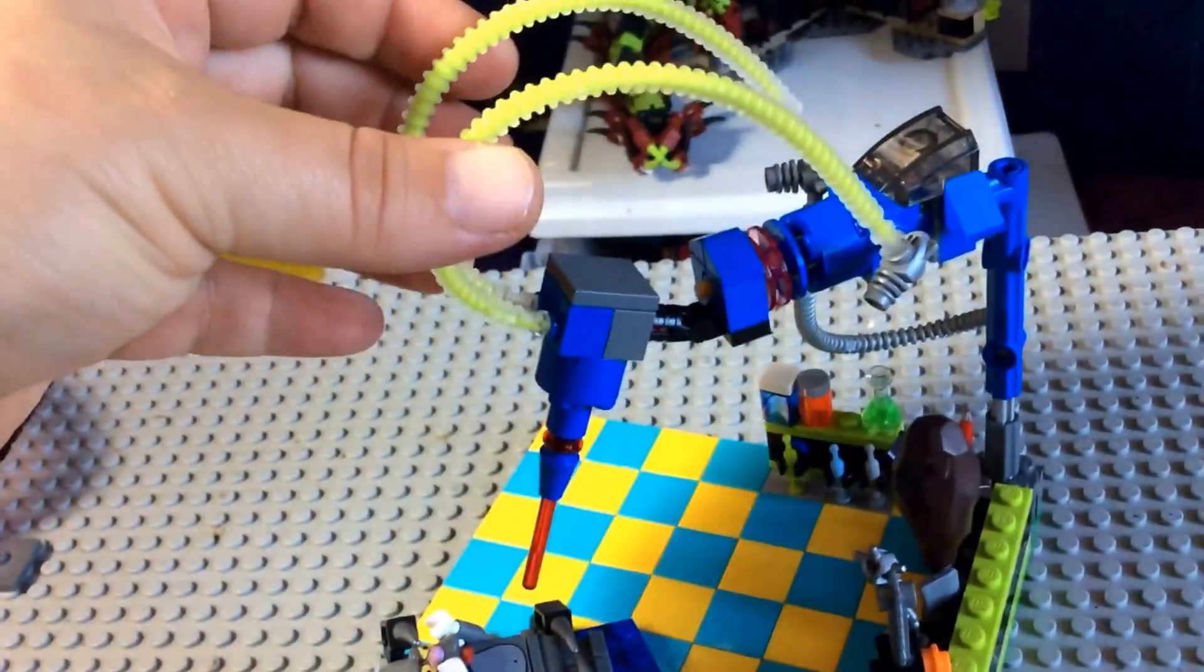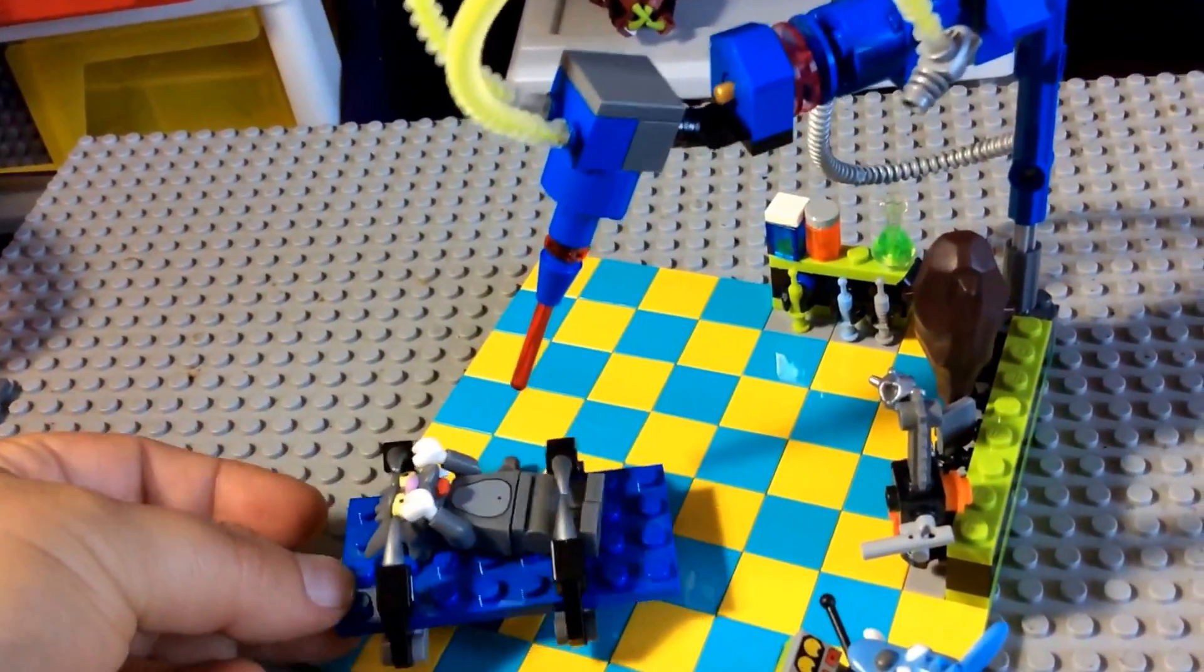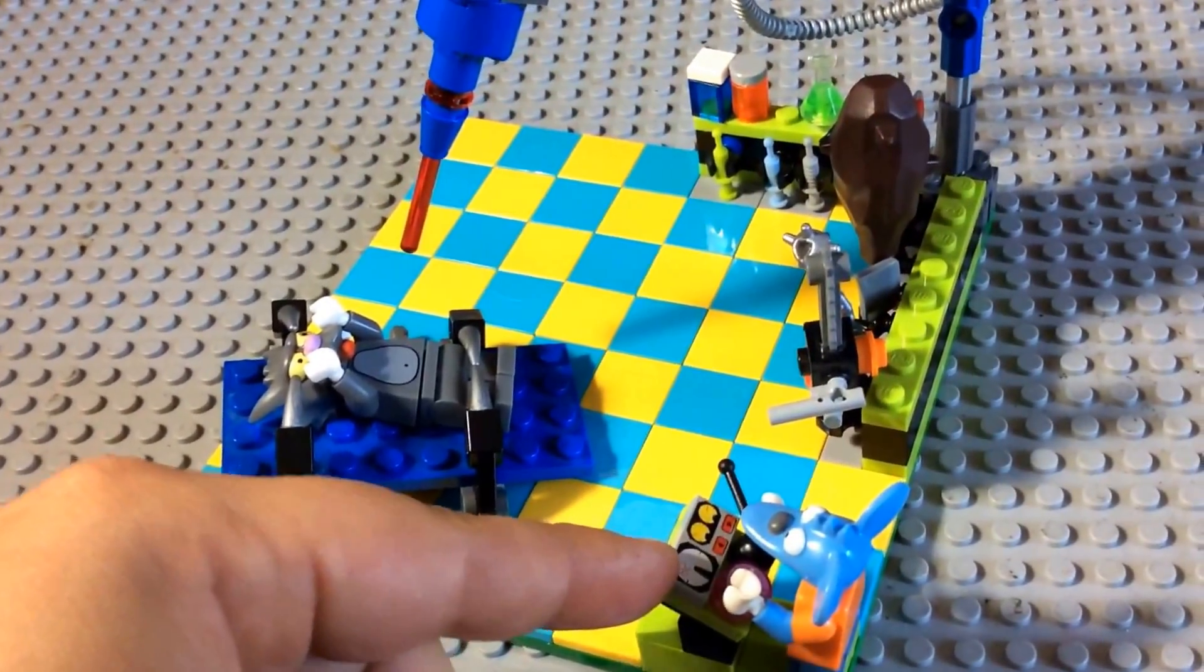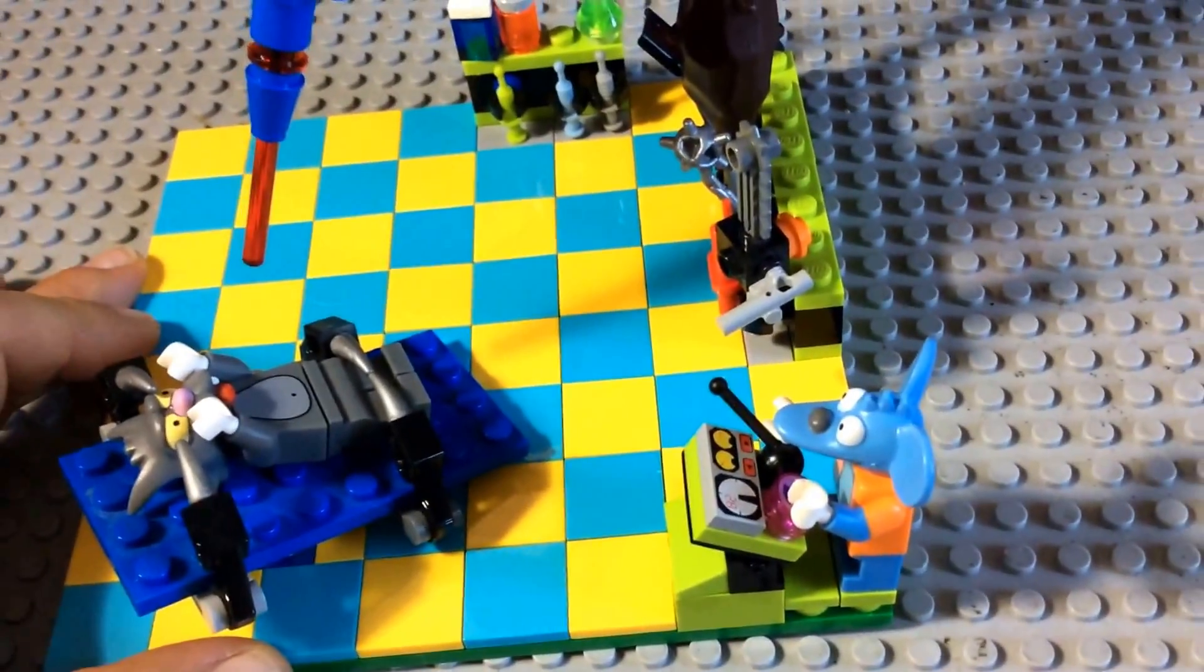The main features are this laser, the table here where you strap Scratchy to it, and you have an area here where Itchy is controlling the laser.